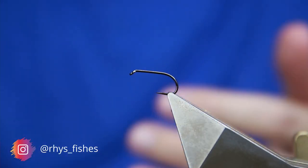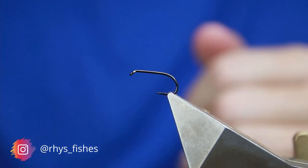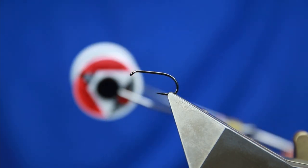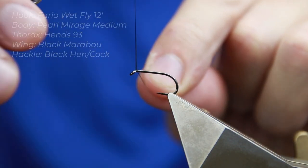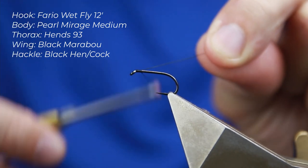So the hook I've got on the vise is a size 10 barbless wet fly ferreo hook. The thread I'm going to use is just some UTC sentient black, and all we're going to do is come down and build a small little body.